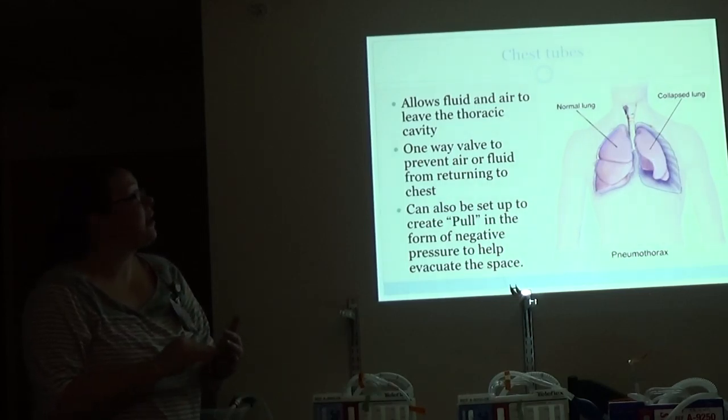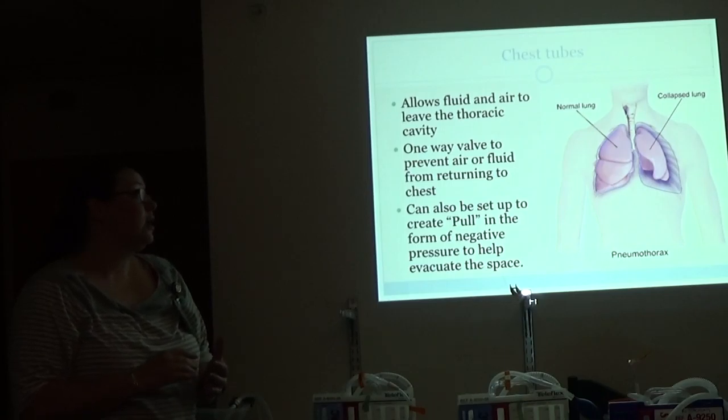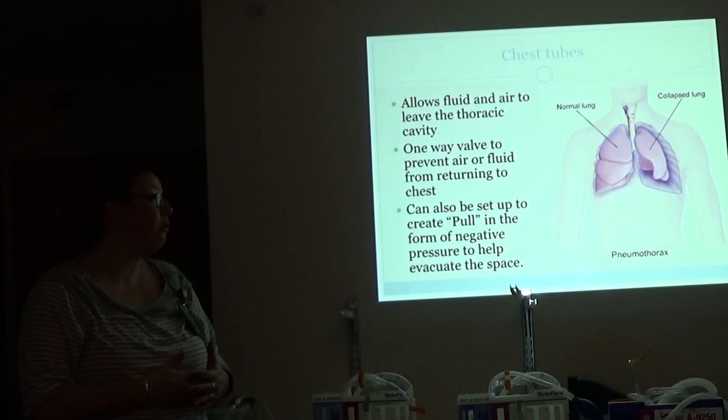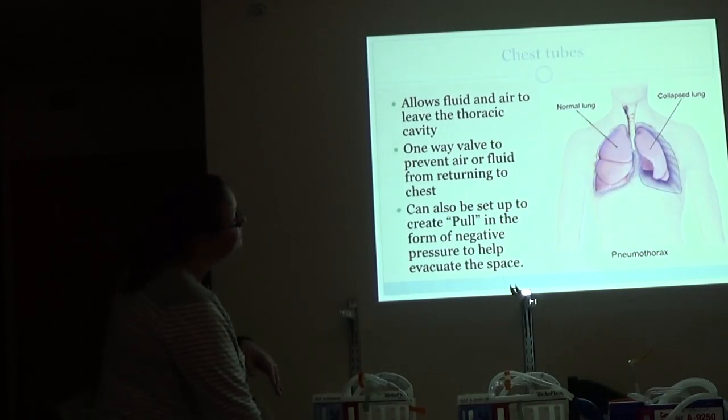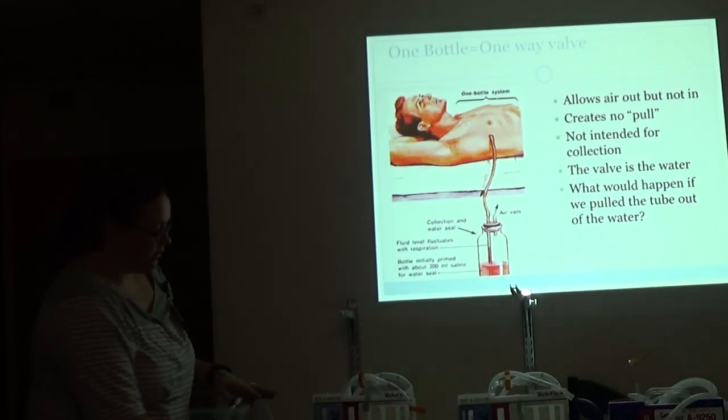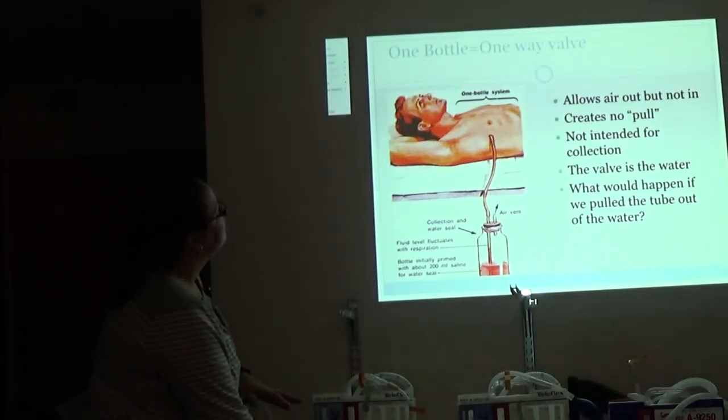So chest tubes allow air and fluid to leave the thoracic cavity. It's a one-way valve to prevent that from returning back into the chest, and it can also be set up to create pull in the form of negative pressure to help evacuate the space.